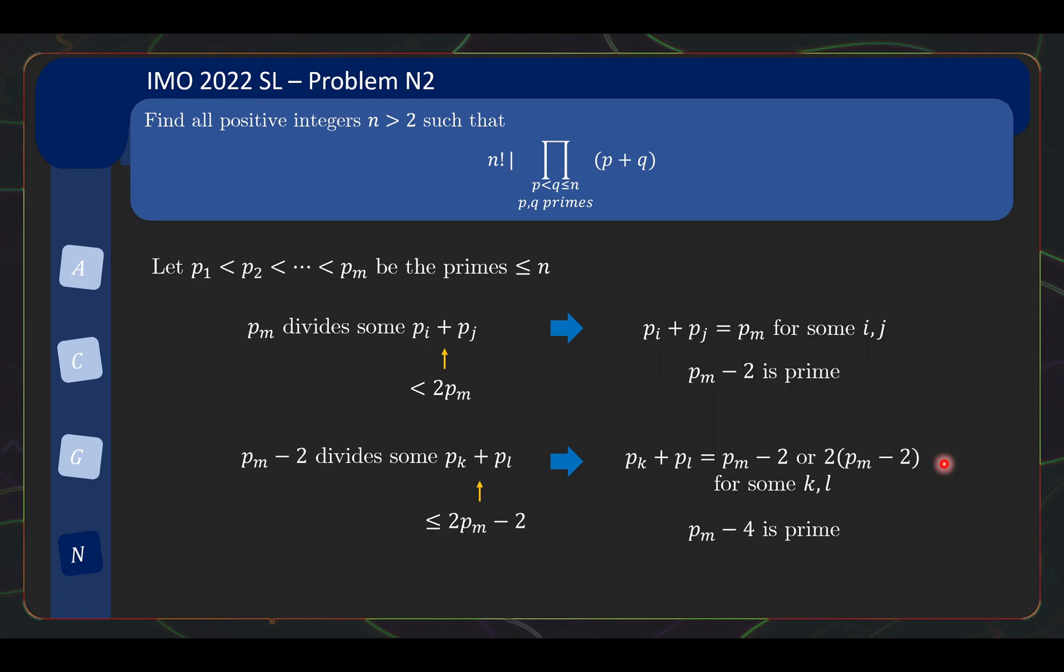We again reach this conclusion, which looks a bit more cumbersome now, but it turns out that it will force p_m - 4 to be a prime. In the first case where the two primes sum to p_m - 2, again this is odd, so it must be the case that one of the primes here is 2 and the other will have to be p_m - 4. In the second scenario, the larger of the two primes must be p_m, and the other number is forced to be p_m - 4. So again we force p_m - 4 to be a prime.